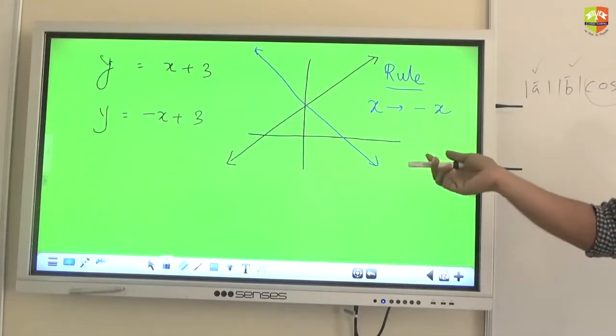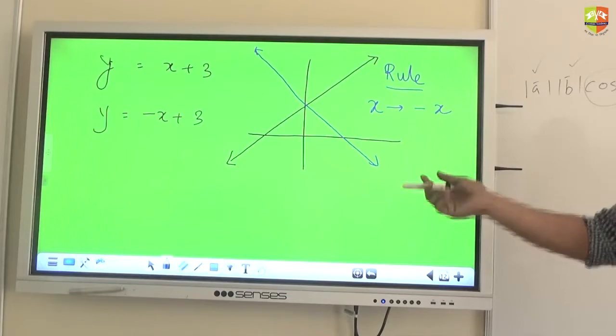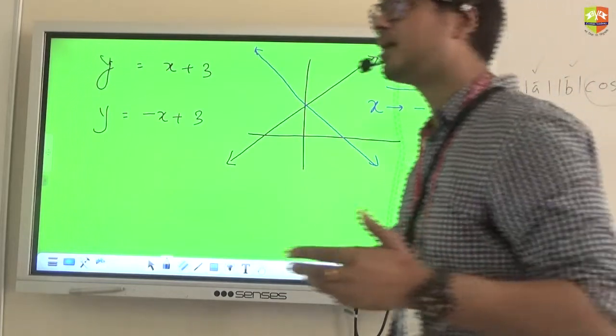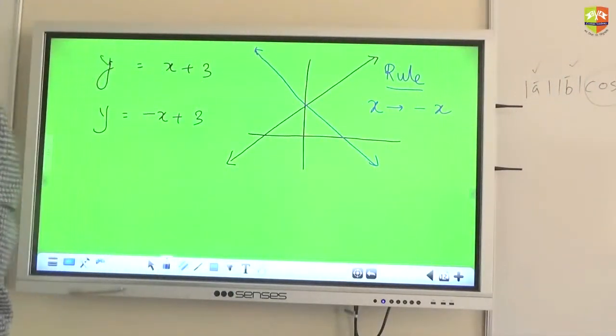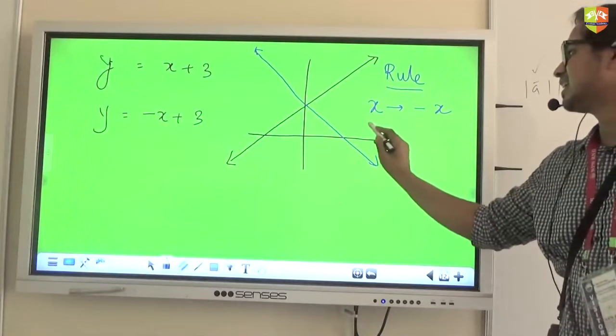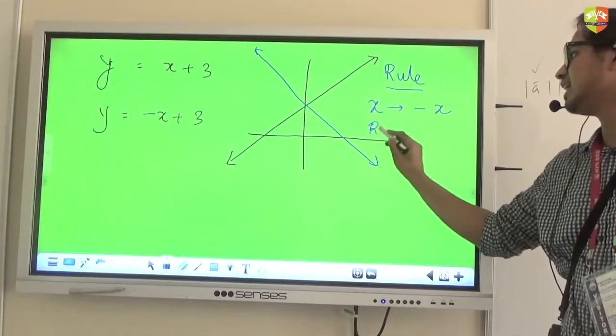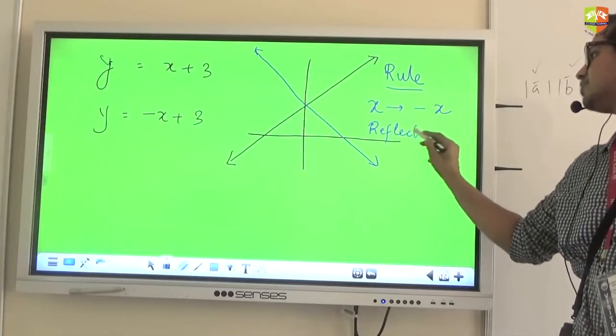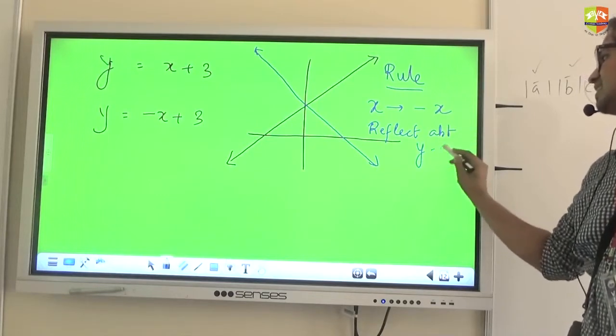in any function if you replace your x with minus x, the graph of the function will get reflected about which axis? About the Y axis. Then the graph will be reflected about the Y axis.